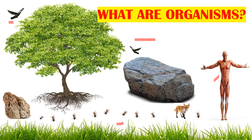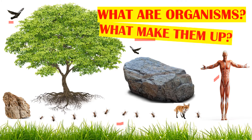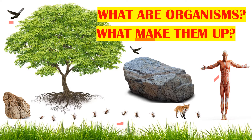Another question is: what makes them up? Human beings, plants, insects, and birds are made up of cells. We will discuss about that later on. In short, these are organisms, and organisms are made of cells in order to form into living creatures.